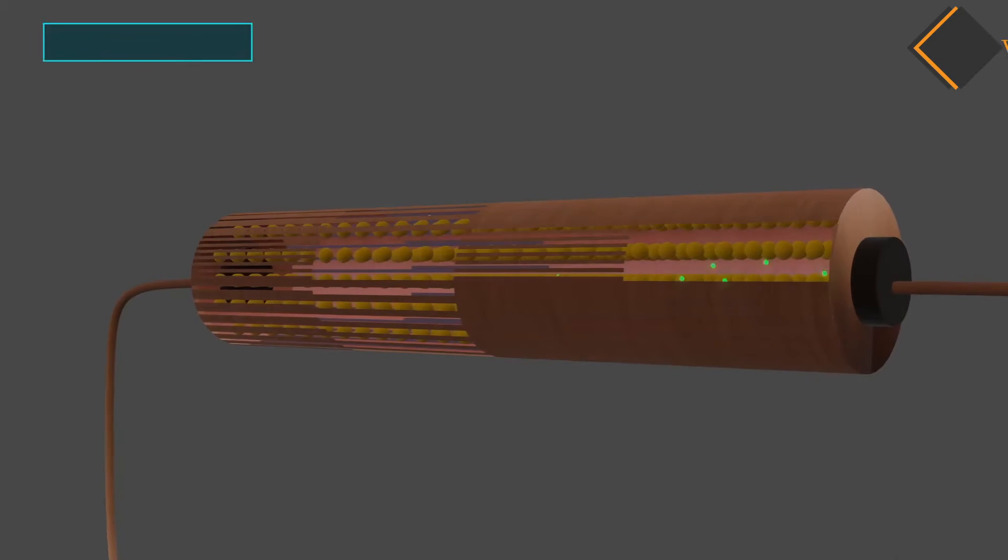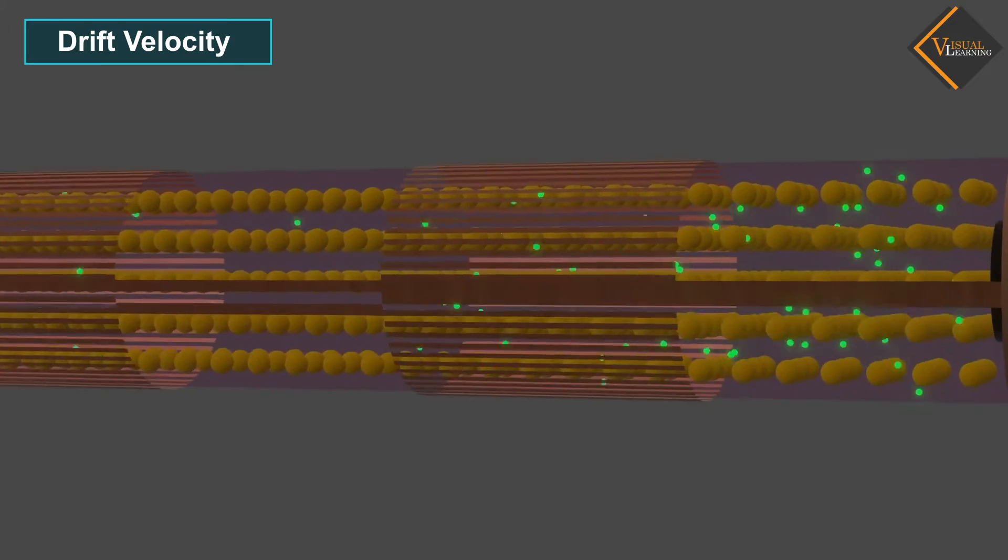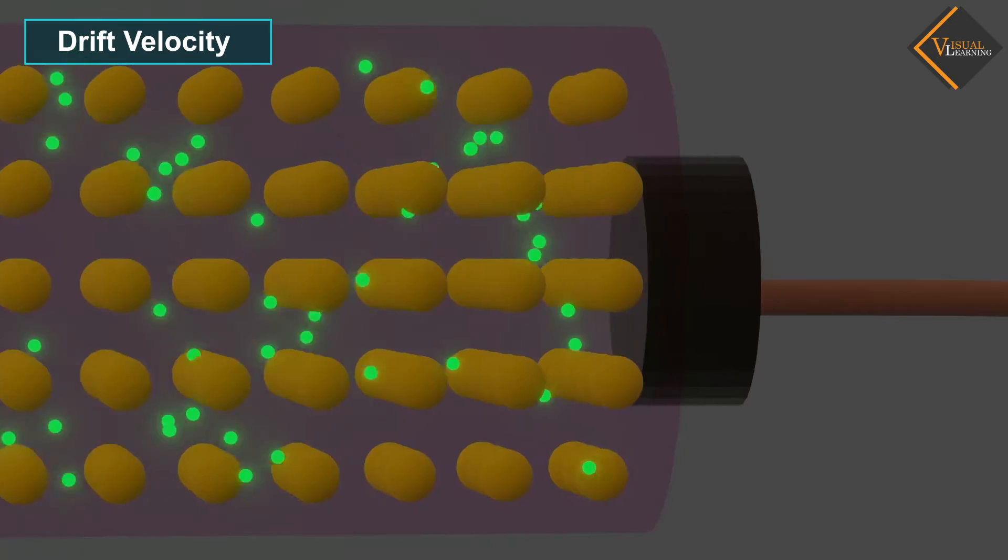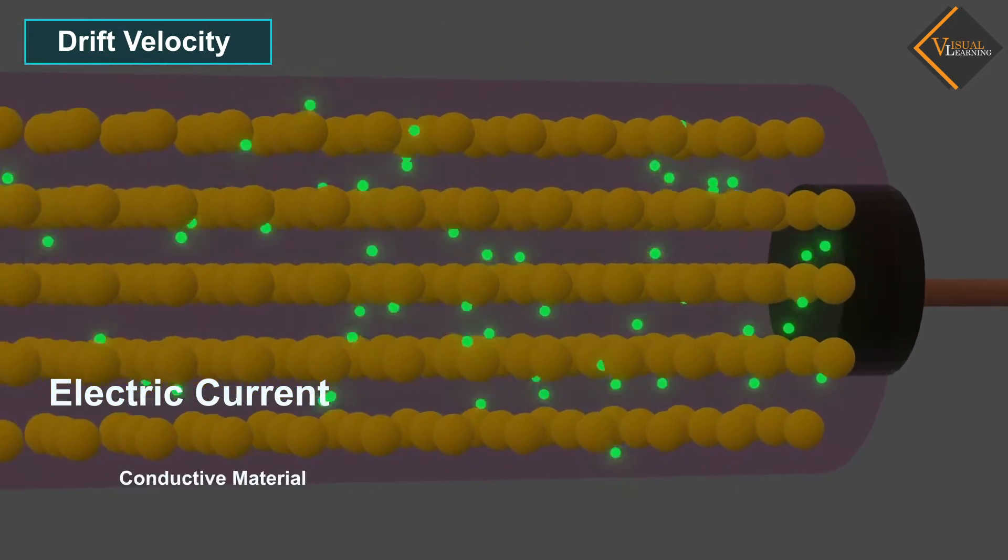In this video we will understand drift velocity. Drift velocity is a concept used in physics that is important for understanding the flow of electric current in wires and other conductive materials.